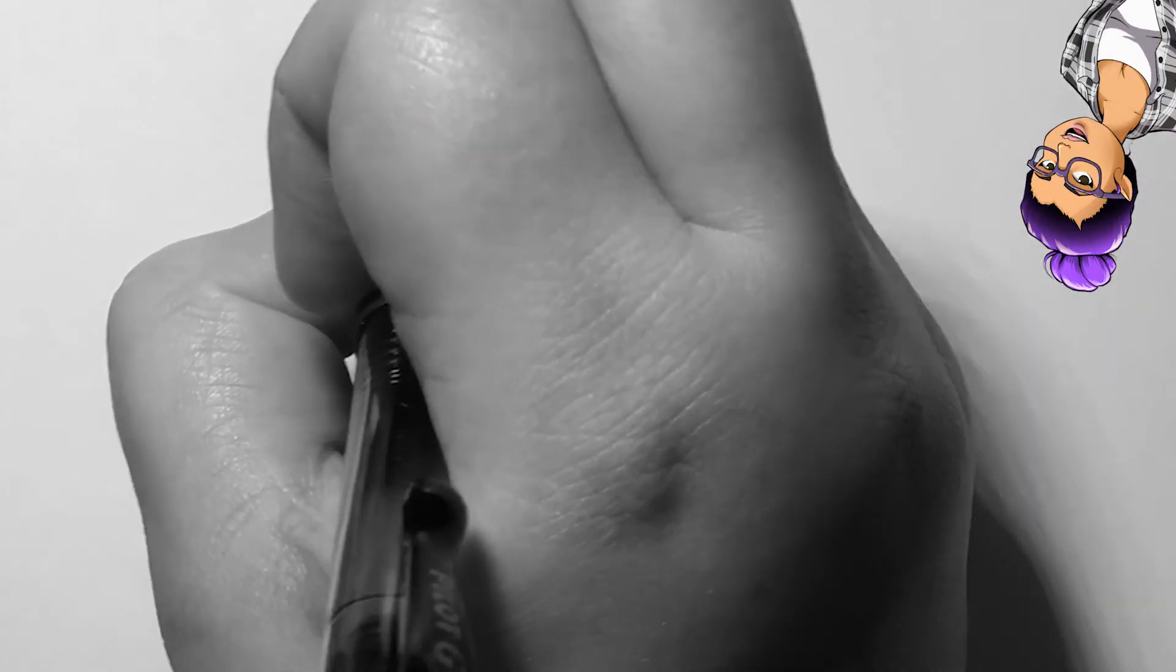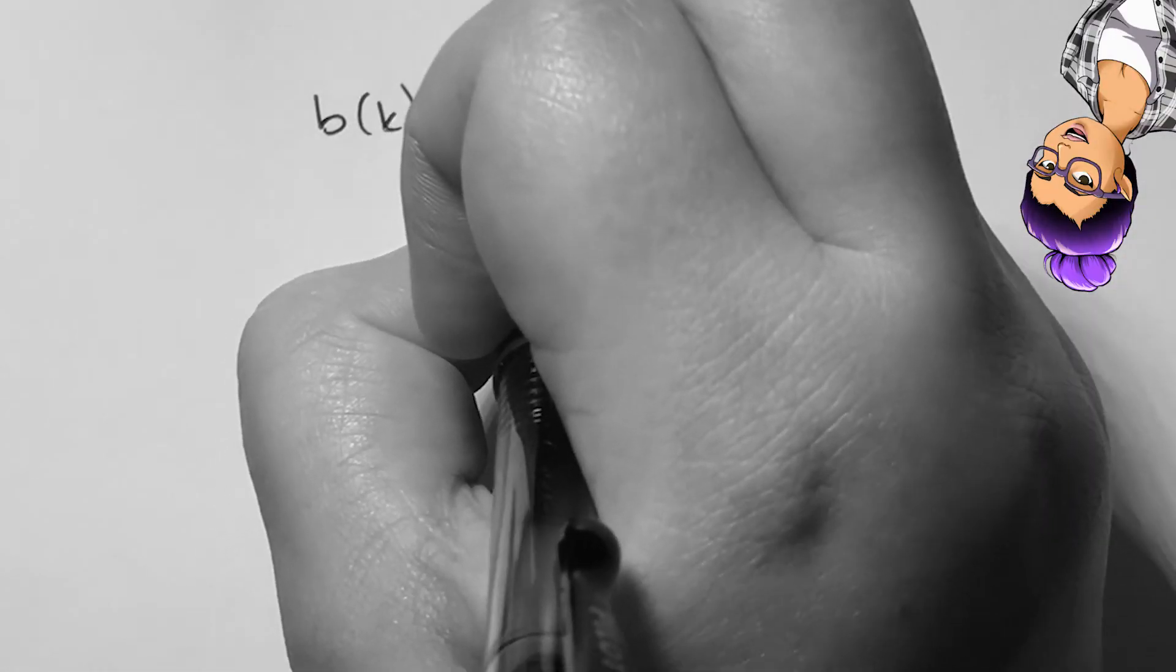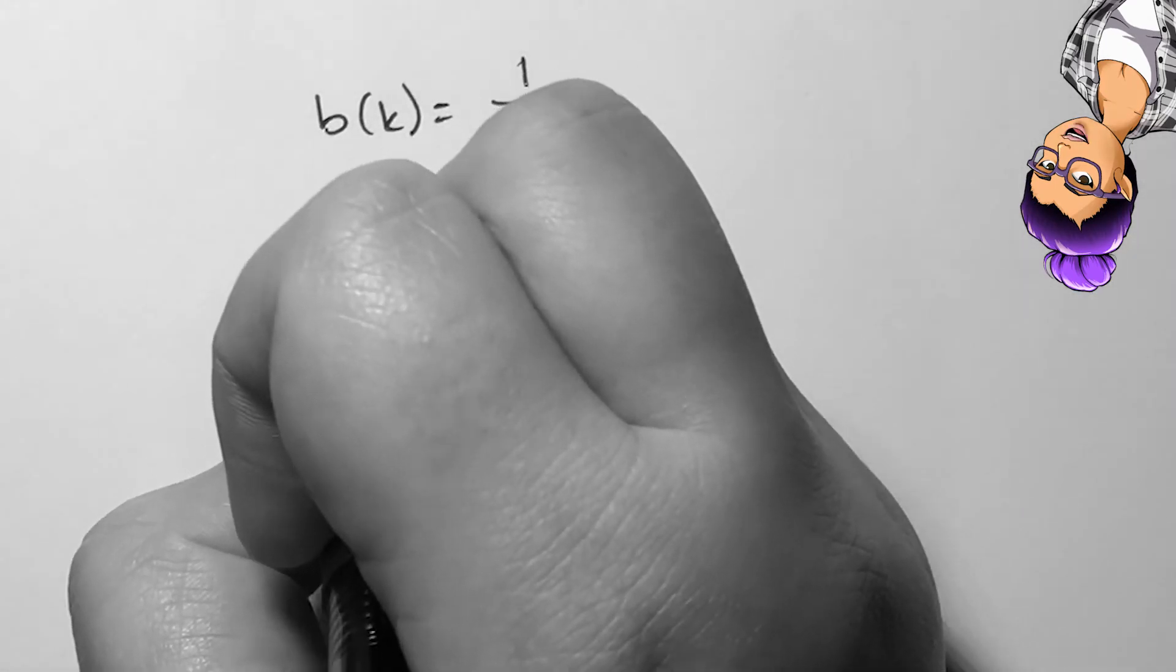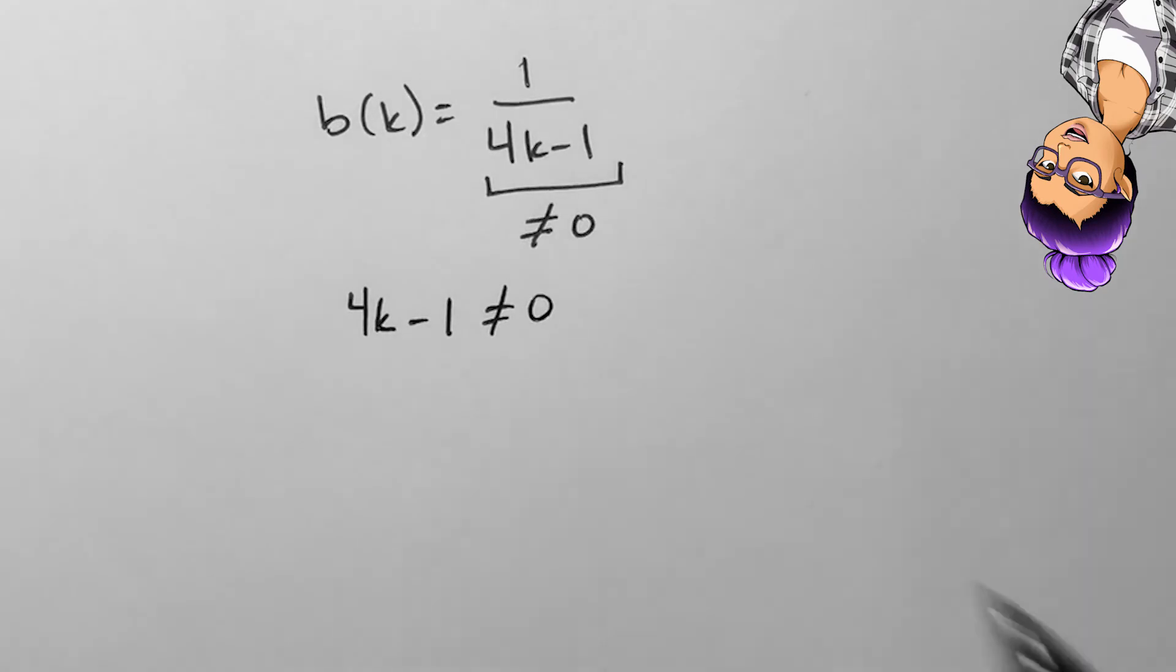If b of k equals 1 over 4k minus 1, then I would need to think about the reciprocal function. 0 was left out of the domain for the reciprocal function because we can't divide by 0.